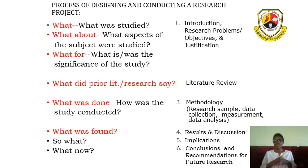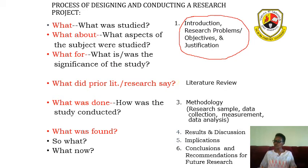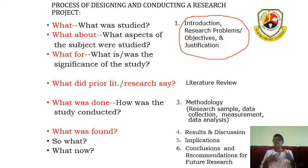These questions essentially guide our entire report. When we say what we want to study, we are basically talking about our first chapter. What aspects of the subject are we studying? What is the significance of the study? This is essentially the first chapter — where we introduce what we are trying to do, talk about our research problem, our objectives, and our justification for why we want to do this.